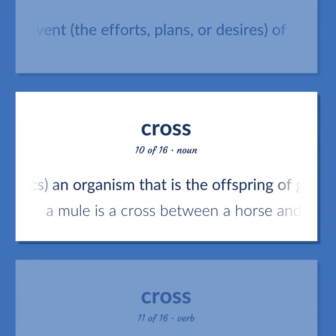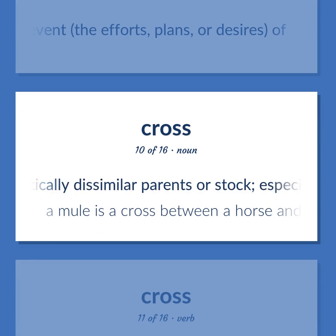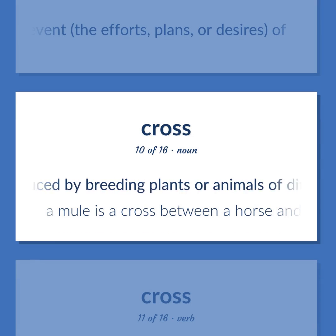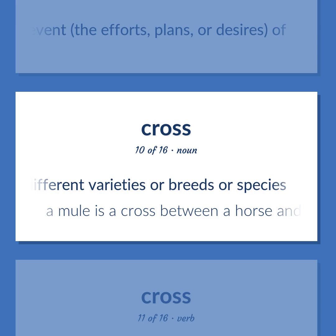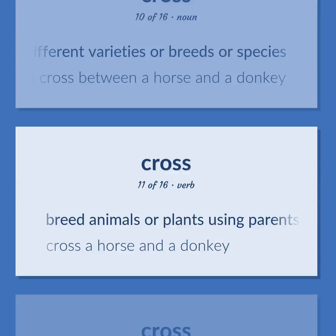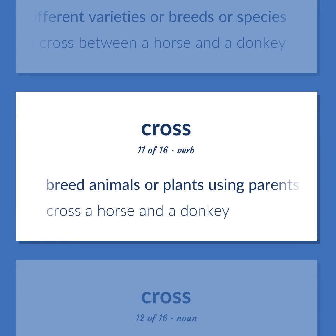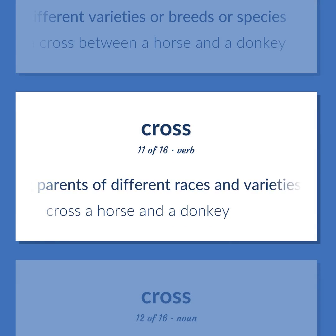Cross — Genetics: An organism that is the offspring of genetically dissimilar parents or stock, especially offspring produced by breeding plants or animals of different varieties, breeds, or species — a mule is a cross between a horse and a donkey. Breed animals or plants using parents of different races and varieties — cross a horse and a donkey.